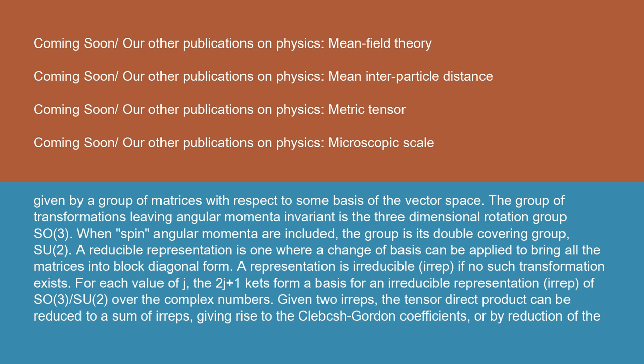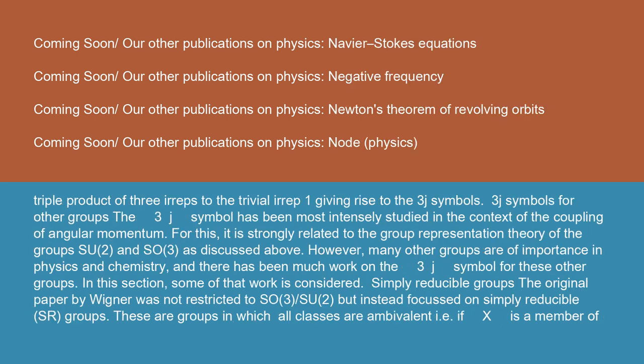Given two irreps, the tensor direct product can be reduced to a sum of irreps, giving rise to the Clebsch-Gordon coefficients, or by reduction of the triple product of three irreps to the trivial irrep, giving rise to the three J symbols. Three J symbols for other groups: the three J symbol has been most intensely studied in the context of the coupling of angular momentum. For this, it is strongly related to the group representation theory of the groups SU(2) and SO(3), as discussed above. However, many other groups are of importance in physics and chemistry, and there has been much work on the three J symbol for these other groups. In this section, some of that work is considered.